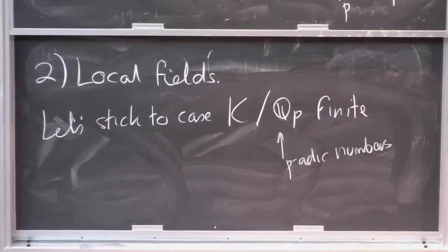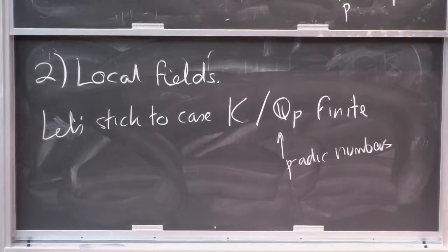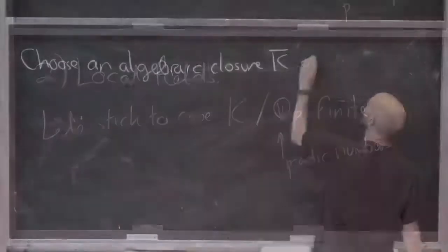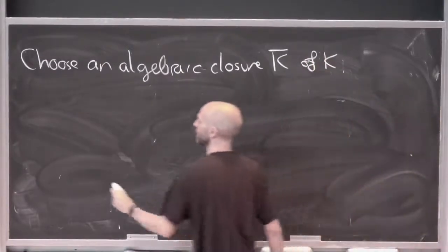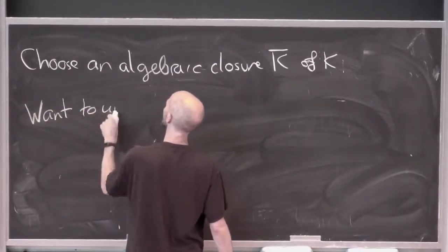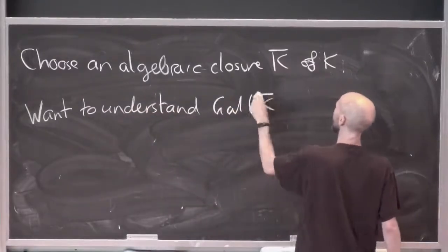So K over Q_p is finite, and the question I want to ask is: what can we say about the Galois group Gal(K̄/K)? Any field has an algebraic closure, unique up to (typically non-unique) isomorphism. Choose an algebraic closure K̄ of K, and we want to understand Gal(K̄/K).